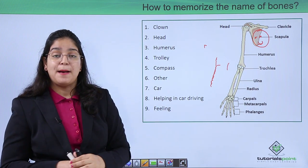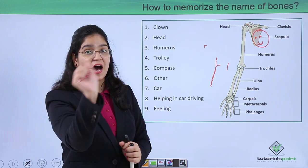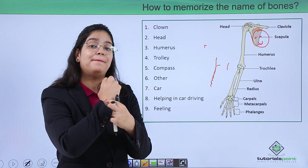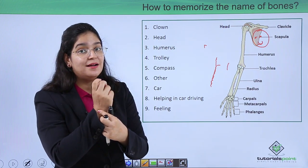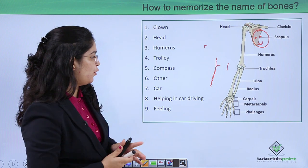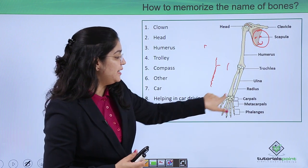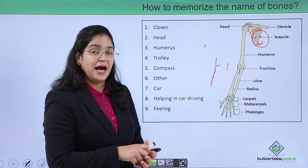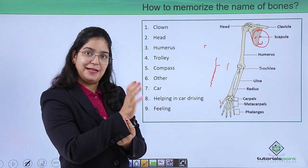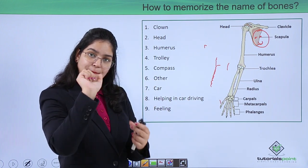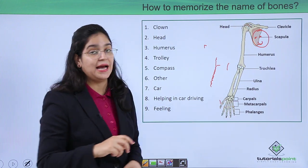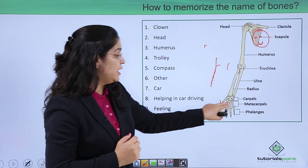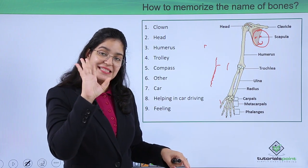Now let's come to the hand bones. By which part do we move our car? We move our car by the carpal bones — so these are the carpal bones which help us steer. The palm bone is the metacarpal, and the part by which we feel things is the phalanges.